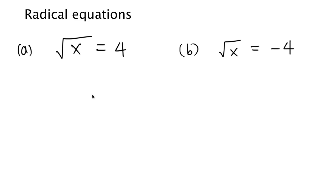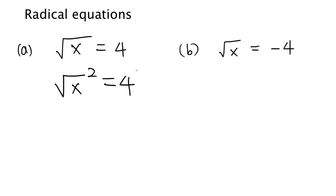I'm going to square both sides of the equation to get rid of the radical sign. Whatever you do to the left-hand side of the equation, you have to do the same thing to the right-hand side. So square root of x squared equals 4 squared.